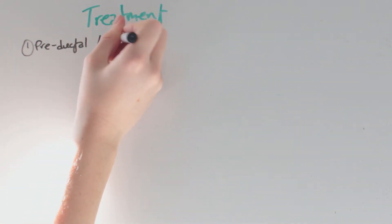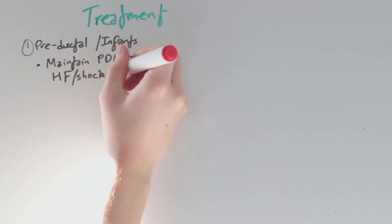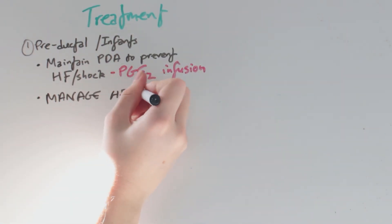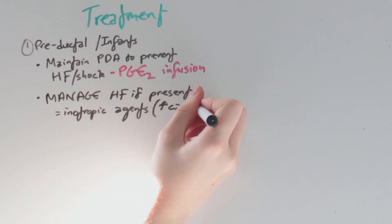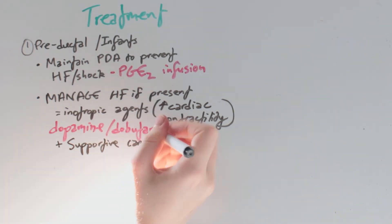In pre-ductal type, it is crucial to maintain the patent ductus arteriosus to prevent heart failure and shock. This is achieved with a prostaglandin infusion. We should manage heart failure if present with inotropic agents which increase cardiac contractility. Dopamine or dobutamine are the options. In addition, we need supportive care.